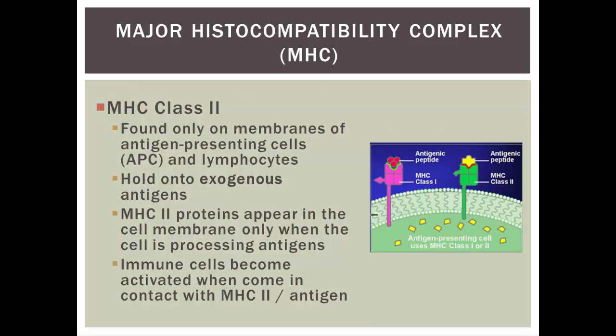MHC class 2 are found only on antigen presenting cells. These are typically exogenous antigens — antigens that the macrophage or dendritic cell has picked up from the environment by engulfing it, processing it, and then sticking it on its MHC class 2. So MHC class 2 has on it a foreign antigen — say bacterial, viral, or parasite — something that doesn't belong. This way the macrophage acts as the scout, going to the helper T cell and saying, 'Hey, look what I found — this antigen is dangerous.'